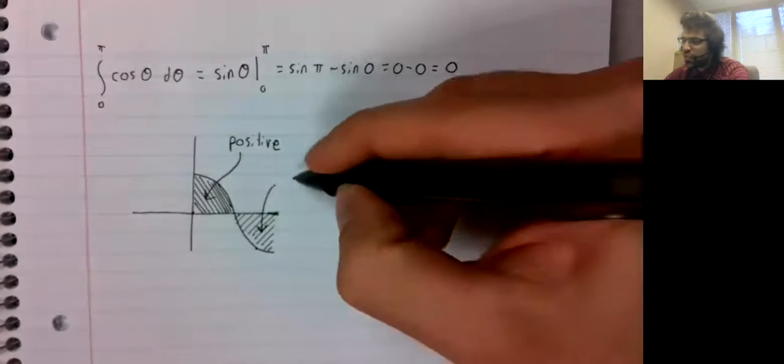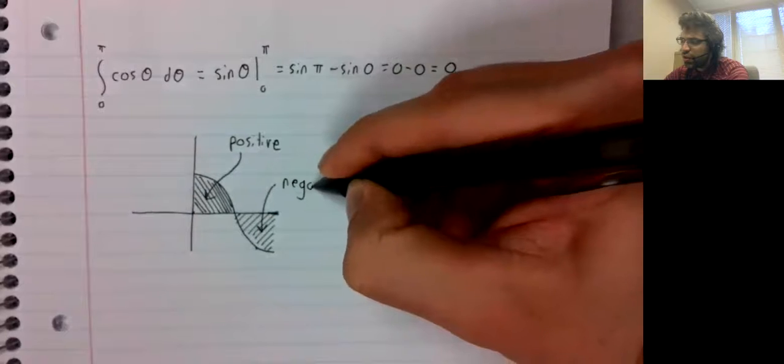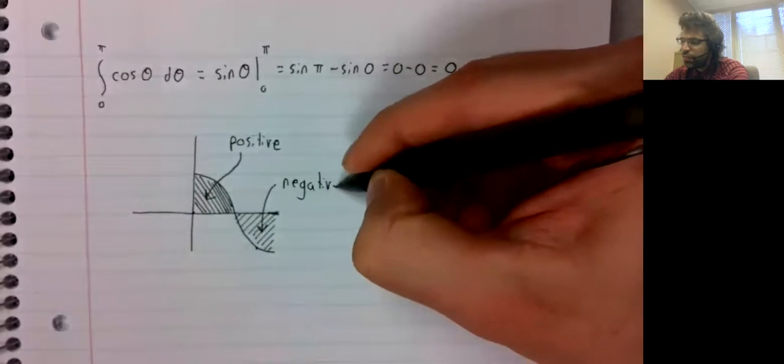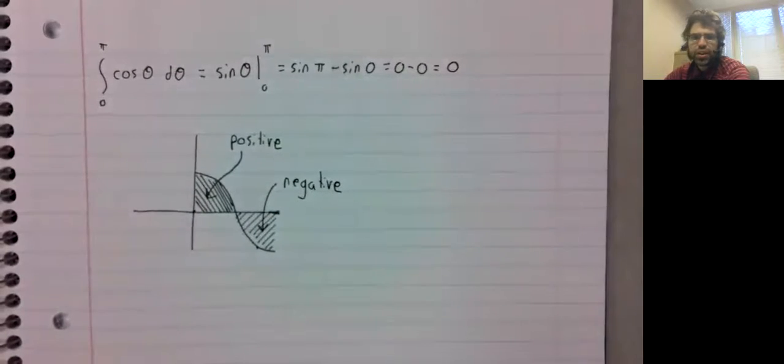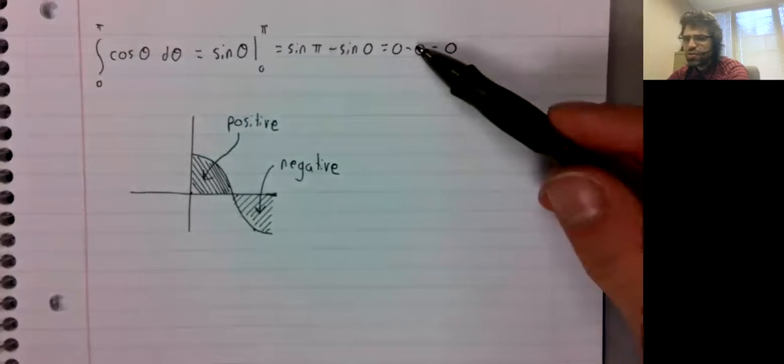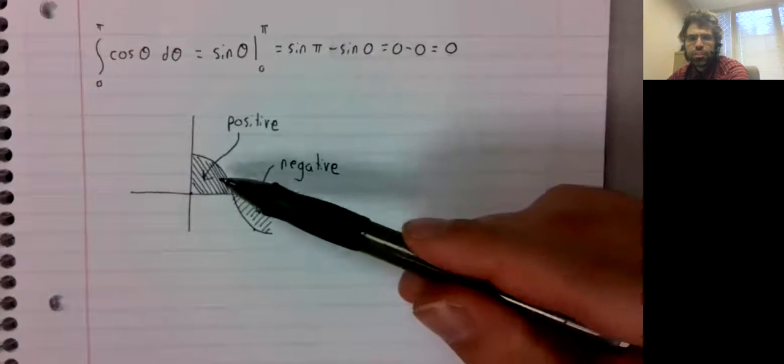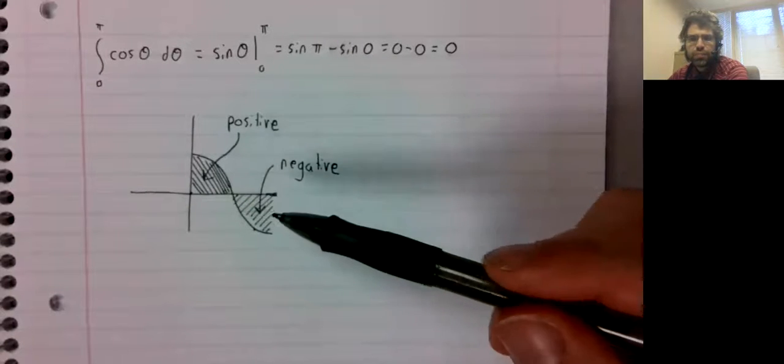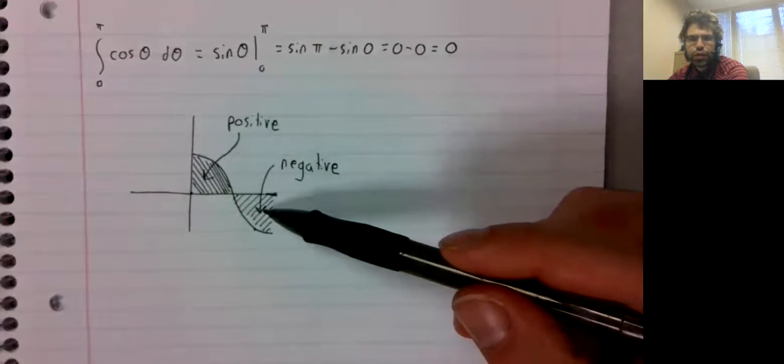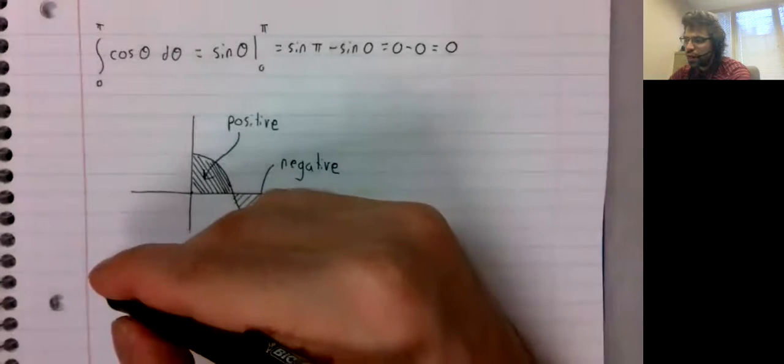But this area above the curve is counted as negative. So that's how we were able to get to zero here. The positive area and the negative area canceled each other out.